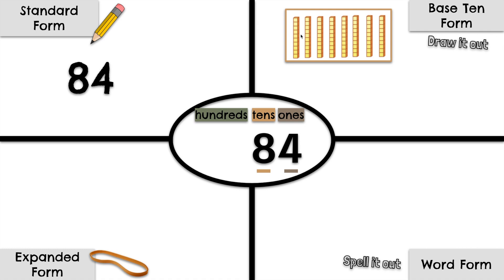Let's count: 10, 20, 30, 40, 50, 60, 70, 80. The 8 is in the 10's place, so it's worth 80. Now we need 4 ones: 1, 2, 3, 4.